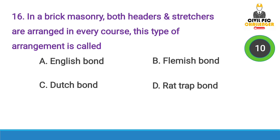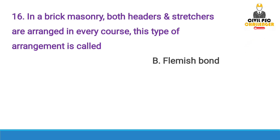Next question: In brick masonry, both headers and stretchers are arranged in every course. This type of arrangement is called — Answer option B, Flemish Bond.